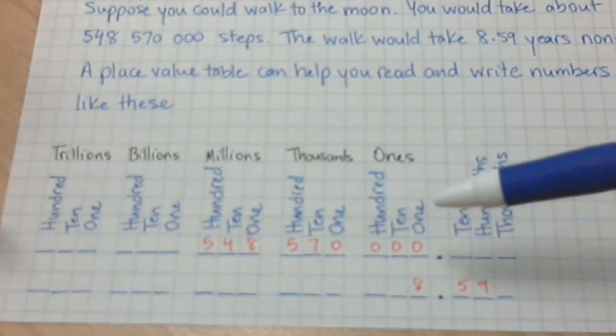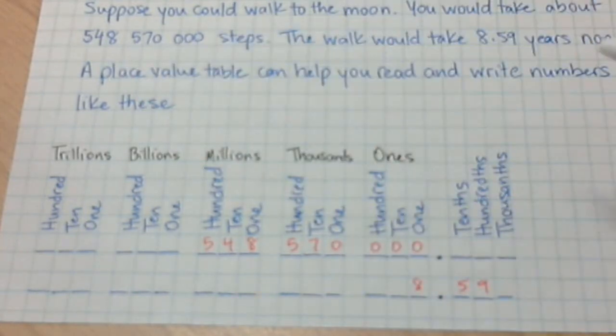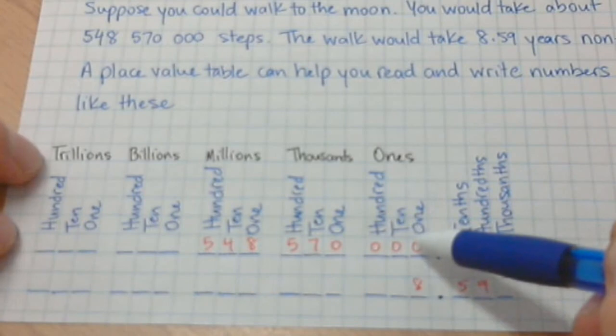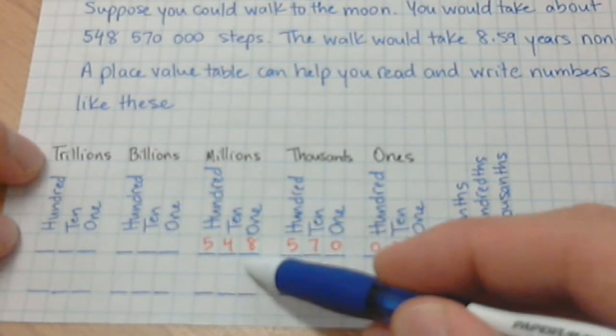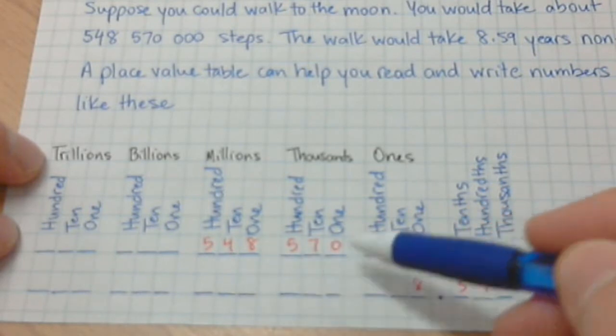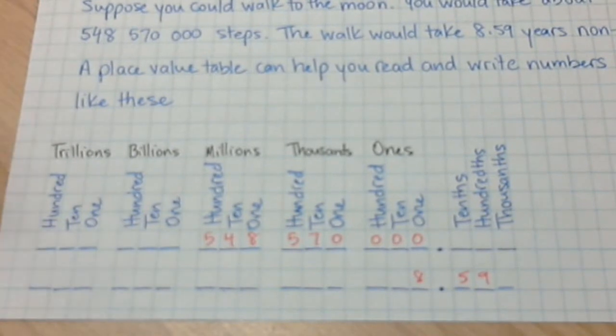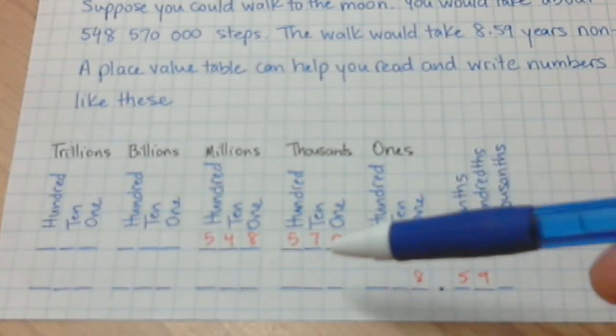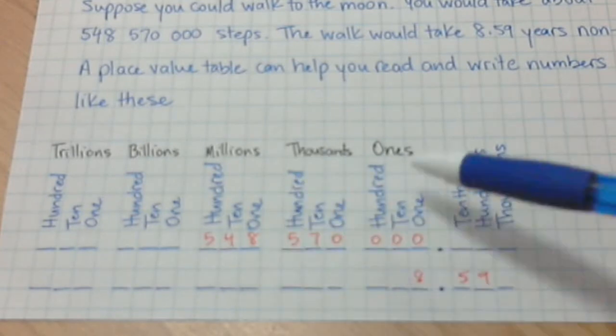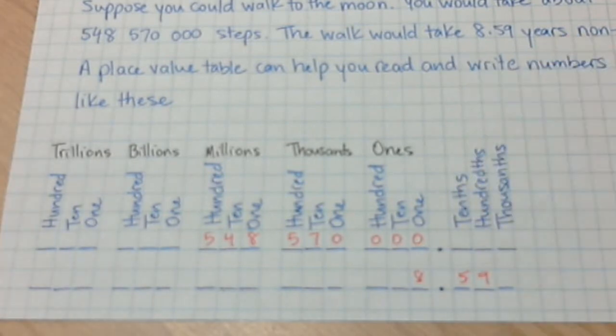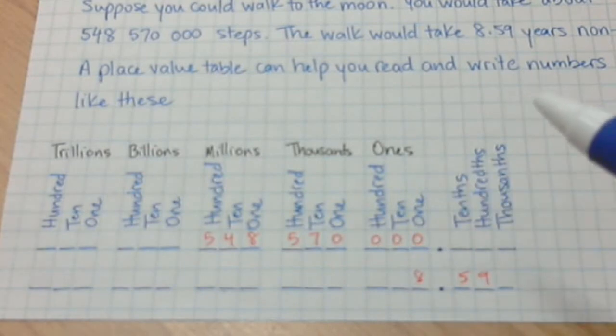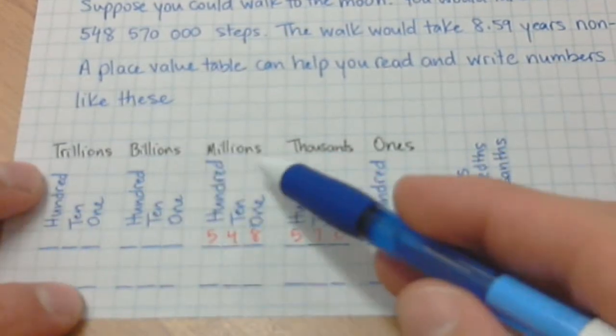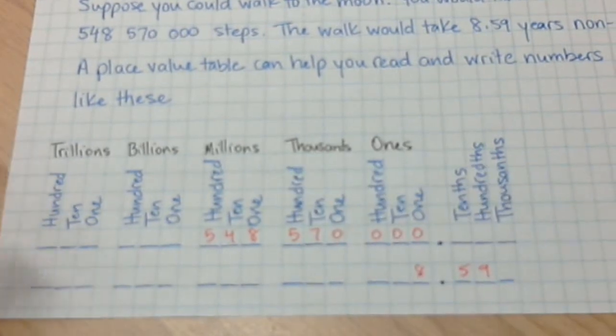So the number that we're working with up here, this 548,570,000, can get written like this. We start in the millions, so it's 548 million, 570 thousand. That's how we say that number, that's how it all gets organized in the place value chart. Also, you'll notice there are little spaces between the groupings of numbers. These groupings of numbers, the technical term is, they're called periods. So this is the millions period, this is the thousands period, and the ones period.